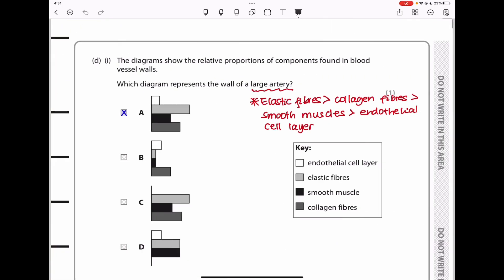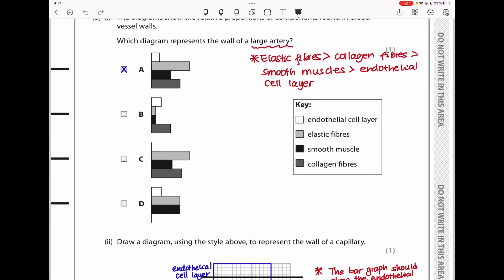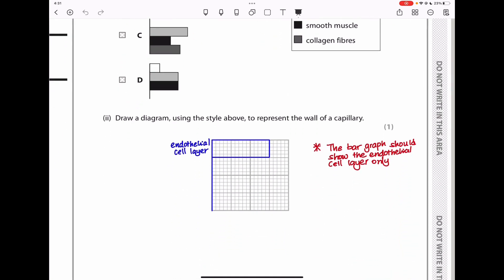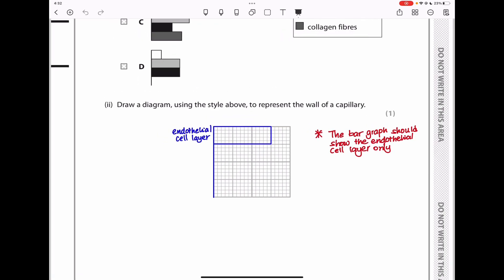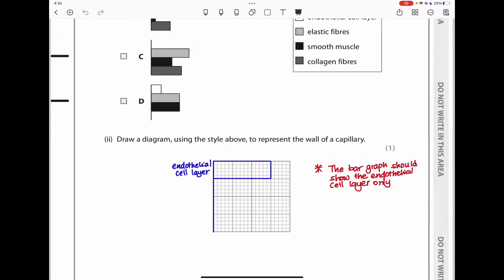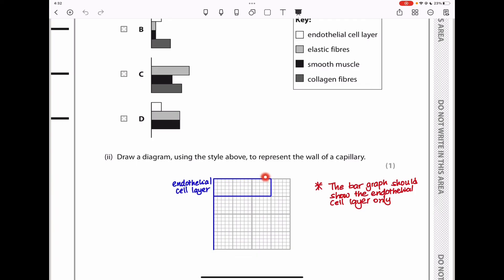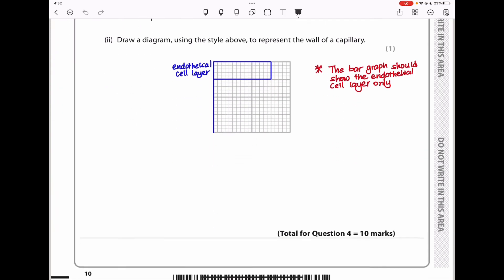Part D, the diagrams show the relative proportions of components formed in blood vessel walls. Which diagram represents the wall of a large artery? Large arteries should have elastic fibers, which are higher than collagen fibers, larger than smooth muscles, and then endothelial cell walls. So the answer came out to be A in comparison to the others. Draw a diagram using the style above to represent the cell walls of capillaries. We know capillaries have only endothelial cells, so it doesn't matter whether you draw it big or small, provided you only draw the endothelial cell layer, no collagen fibers, no elastic fibers, no smooth muscles, only this, you would get the answer correct.